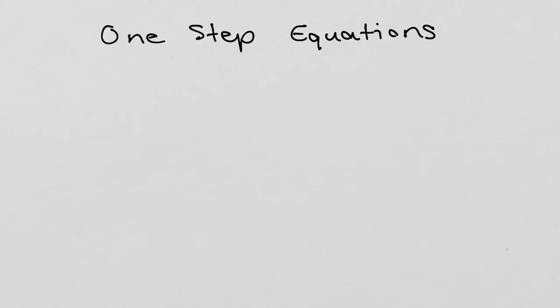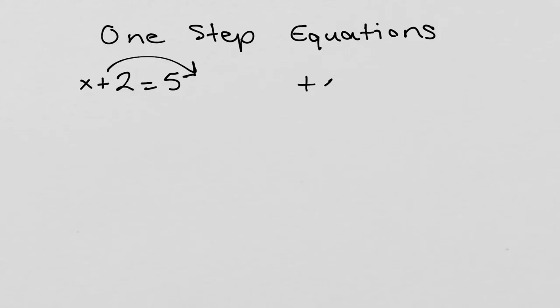One-step equations. Let's look at an example: x plus 2 equals 5. Solve for x. The idea of solving equations is to move everything with the x to the other side of the equation by performing the opposite operation on it. We want only the x to be on one side of the equation. So here, we want to move the plus 2 to the other side. We do that by performing the opposite operation on both sides. The opposite operation of addition is subtraction.